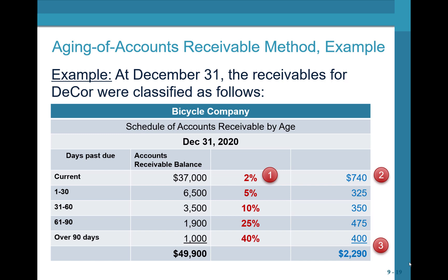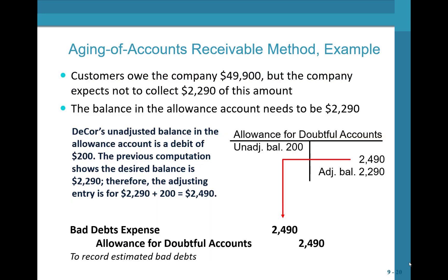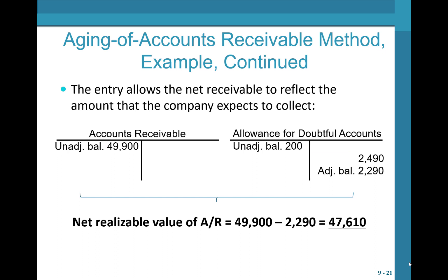Out of $49,900 owed, we estimate $2,290 will be uncollectible. We don't know which customers won't pay, but we estimate around $2,200 won't be collected. The balance in the allowance account therefore needs to be $2,290. If the unadjusted balance was $200 on the debit side, to get from a debit balance of $200 to a credit balance of $2,290, we need to credit the allowance for doubtful accounts by $2,490, and the bad debt expense to record is therefore $2,490.